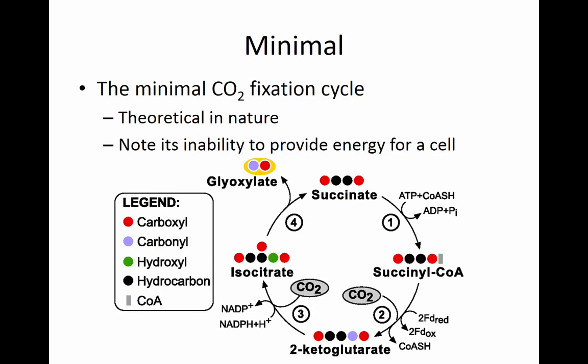A minimal carbon fixation cycle has been worked out — this is a very theoretical thing that hasn't necessarily been done in nature. It uses energy rather than providing energy for a cell. You can see CO2 being converted through a four-enzyme cyclic pathway — succinyl-CoA into alpha-ketoglutarate, and then alpha-ketoglutarate becomes isocitrate with the addition of two CO2 molecules, using a molecule of ATP each time through the cycle. Any natural pathway of this type would need to yield at least a little energy.